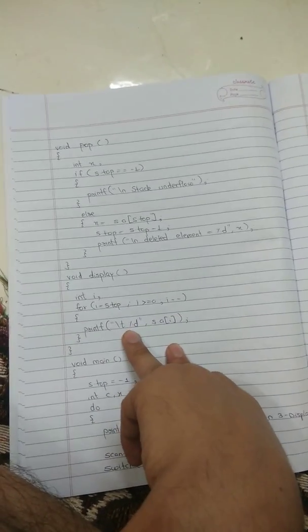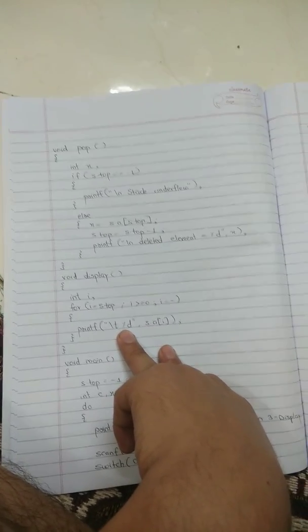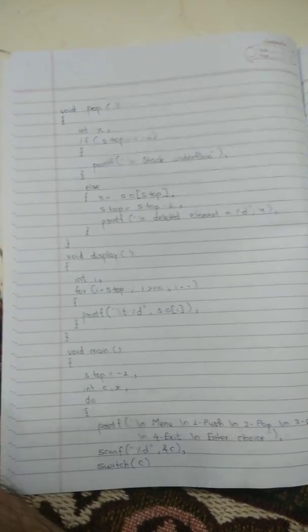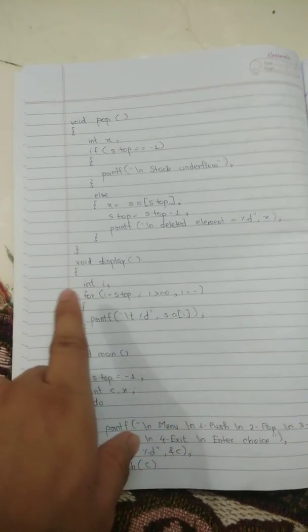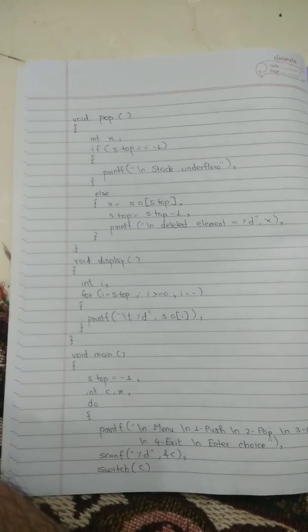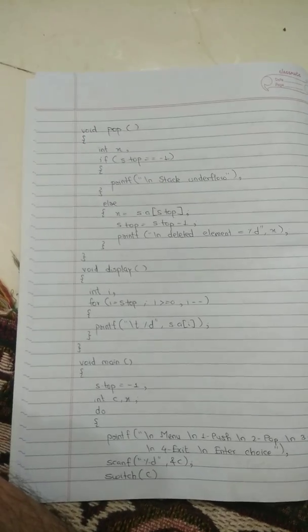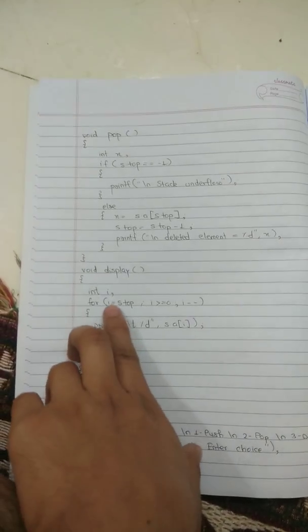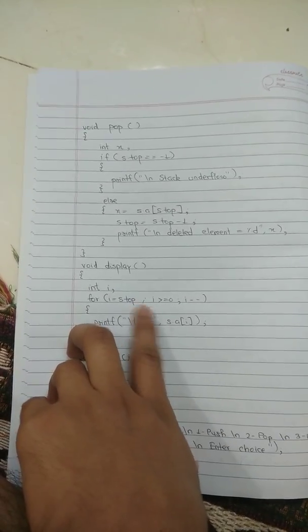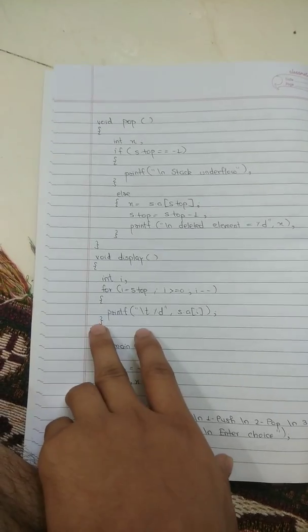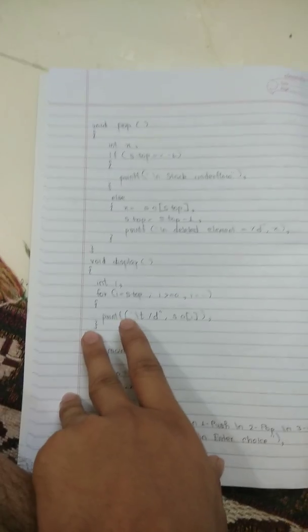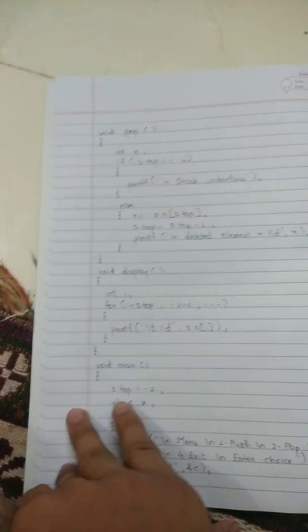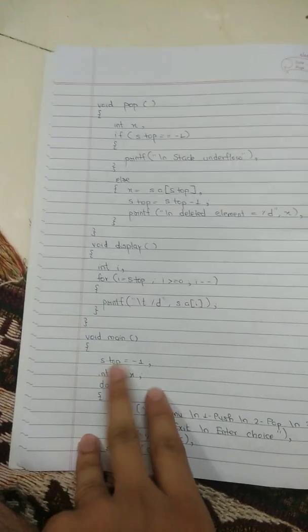Inside the for loop, we print each element using printf with \t (tab), which leaves three spaces between elements, and print s.a[i]. So when the first iteration runs, i equals s.top and the topmost element is displayed. Then s.top-1 element is displayed next, and so on. Elements are shown with spacing: first element, second element, third element, fourth element in order.